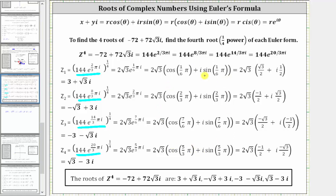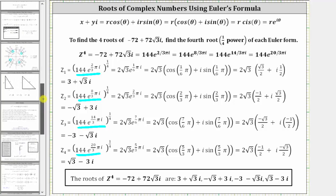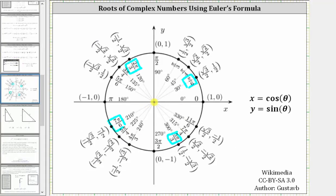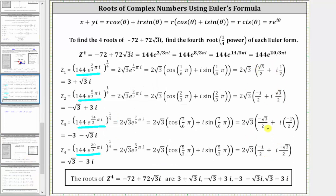We find the eight trig function values using the unit circle, where x equals cosine theta and y equals sine theta. Using the four points on the unit circle for our angles, all eight trig values are shown here. After distributing and simplifying: z sub one equals three plus square root three i; z sub two equals negative square root three plus three i; z sub three equals negative three minus square root three i; and z sub four equals square root three minus three i. These are the four complex solutions of z to the fourth equals negative 72 plus 72 square root three i.